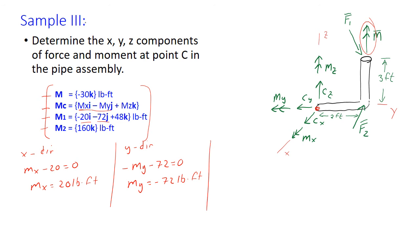And then for the z direction, we look at our k components. We have minus 30, we have a positive Mz our last unknown, plus 48, and then plus 160. The sum of those four components is equal to zero. So we have Mz is equal to negative 178 pound-feet. Thank you for watching.